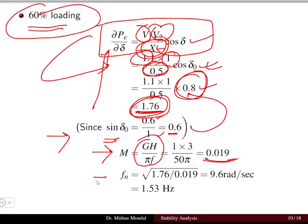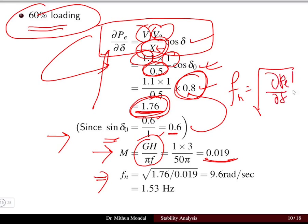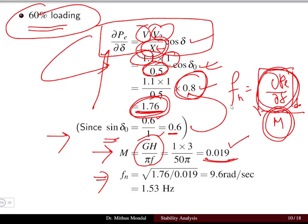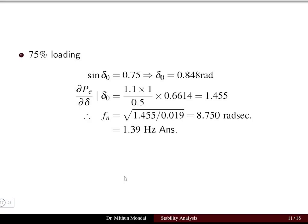The natural frequency of oscillation formula gives ωₙ = √(1.76 / 0.019). This yields a natural frequency of oscillation of 1.53 Hz at 60 percent loading.